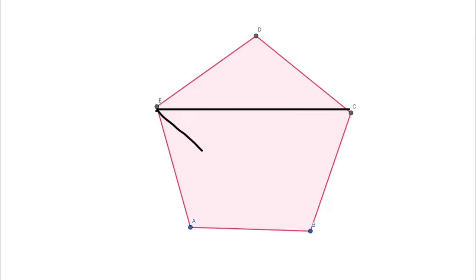If we join EC and join EB, this angle is 108 degrees. This angle is 36 degrees, this angle is 36 degrees.